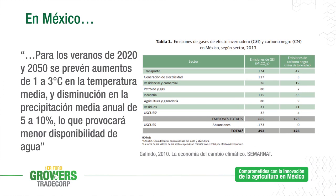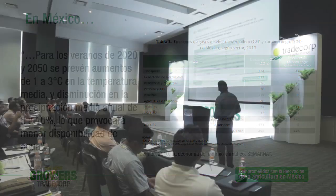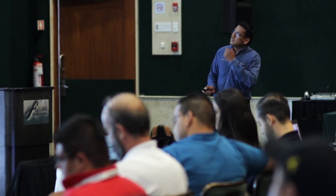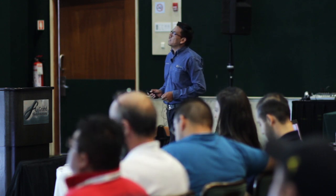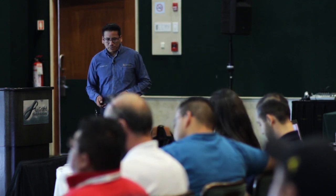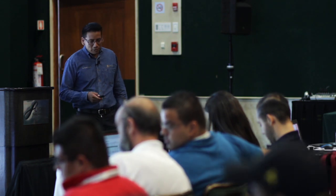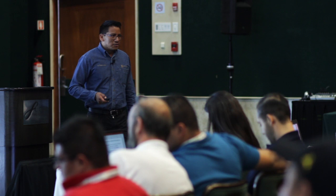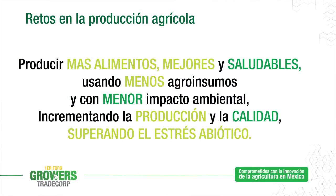Para los años 2020 y 2050 se prevén aumentos de 1 a 3 grados centígrados en la temperatura media, y una disminución de la precipitación media anual de 5 a 10%, lo que nos lleva a menor disponibilidad del agua. Entonces enfrentamos un reto común: producir más alimentos, mejores y saludables, usando menos agroinsumos y manteniendo una calidad en la producción.